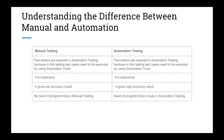Fewer testers are required in automation compared to manual testing, where more testers are needed. Manual testing is generally less expensive than automation. Manual testing gives lower accuracy results because of human effort, while automation gives more accurate results. Manual testing doesn't require programming knowledge, but you must be a subject matter expert of the product. Automation requires a programming language to automate tasks.